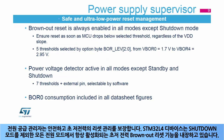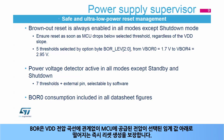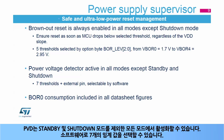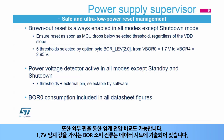The power supply supervisor guarantees a safe and ultra-low-power reset management. STM32L4 devices embed an ultra-low-power brownout reset, which is always enabled in all power modes except shutdown mode. The BOR ensures reset generation as soon as the MCU drops below the selected threshold, regardless of the VDD slope. Five thresholds from 1.7 to 2.95 volts are selected by option byte programmed in flash memory. A power voltage detector can generate an interrupt when VDD crosses the selected threshold. The PVD can be enabled in all modes except standby and shutdown. Seven thresholds can be selected by software; in addition, comparisons can be done with an external pin. The BOR consumption with the 1.7 volt threshold is included in the datasheet.